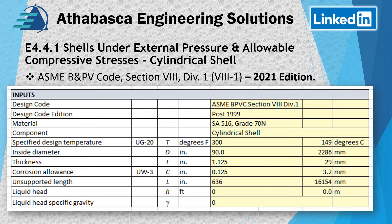Let's look at the 2021 version of ASME Section 8 Division 1 and organize the problem. Material is SA-516 Grade 70 — a pressure vessel material, cylindrical shell. Temperature is 150°C. The dimensions include a starting thickness, a corrosion allowance, and an unsupported length of 636 inches.